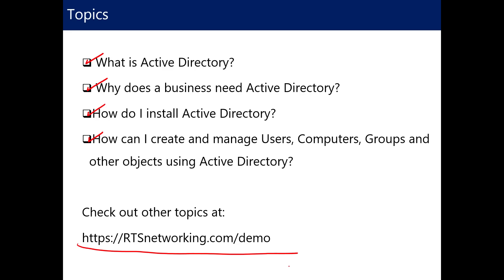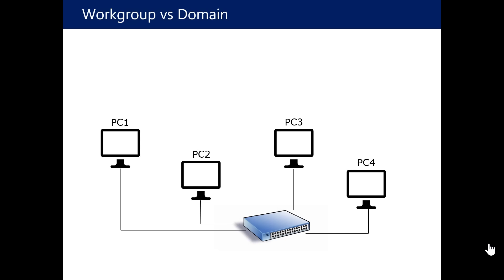There are two types of logical network designs that exist. One is called a workgroup, and the other is called a domain. A workgroup is synonymous with a home network — a very small network, typically less than 20 devices.